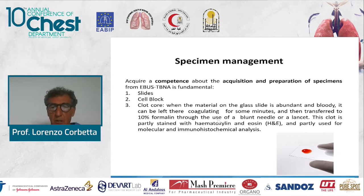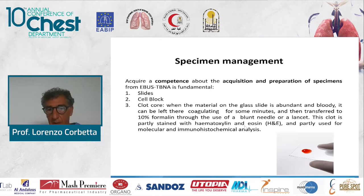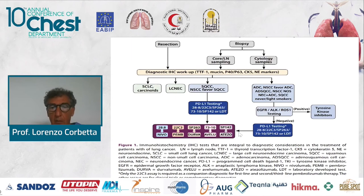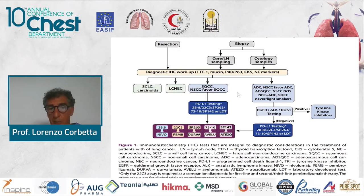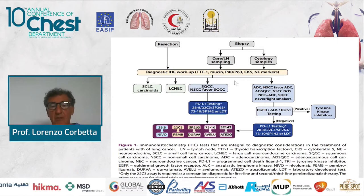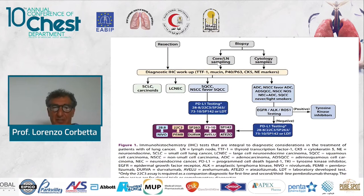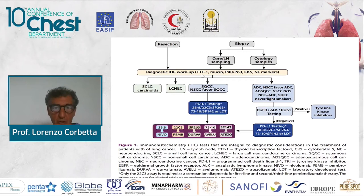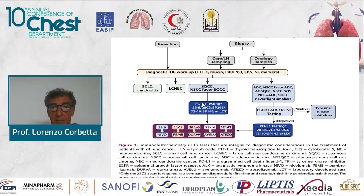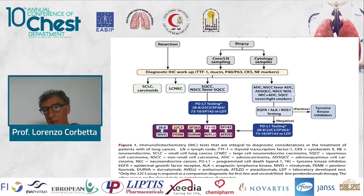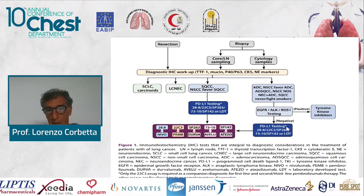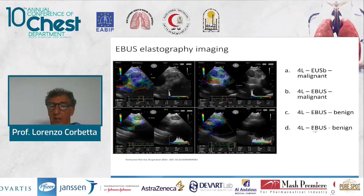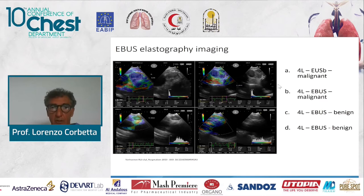We also use the cell block a great deal, and we use a clot core — the material is put on a glass slide, especially when it is very abundant and bloody. We wait a few minutes and then transfer it to 10% formalin. It is very easy for the pathologist to evaluate this kind of sample like a biopsy. We need more and more material — not only for diagnosis, but also for immunocytology, immunohistology, PD-L1 for immunotherapy, and mutation markers for biological treatment.